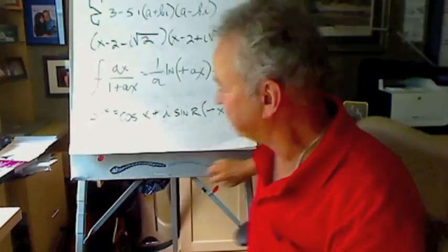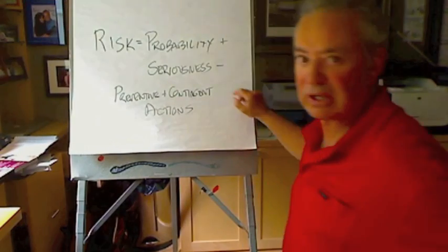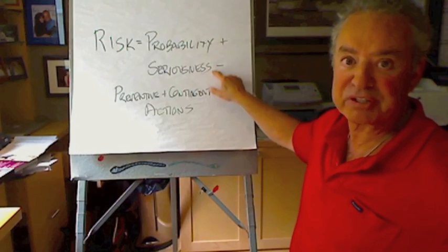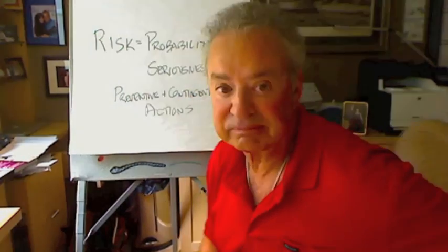If you want to assess risk with any client, under any conditions, strategically, tactically, you just look at two factors: probability and seriousness. Risk equals probability plus seriousness minus the preventive and contingent actions. Risk only has two factors. Risk has probability — the probability of an event occurring — and seriousness, the severity or impact if it does occur. Those are the two components of risk.